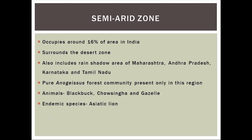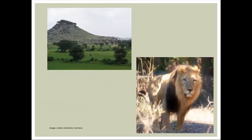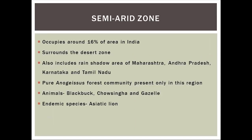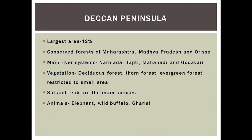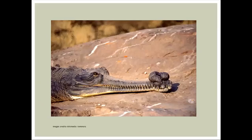The semi-arid zone surrounds the desert zone — remember the plant Anogeissus and Asiatic lion. The Deccan Peninsula is the largest biogeographic zone, and remember the Gharial, a fish-eating crocodile found in the Deccan Peninsula. River Chambal is known for this Gharial.